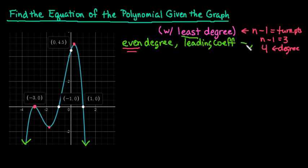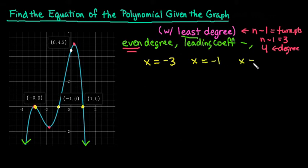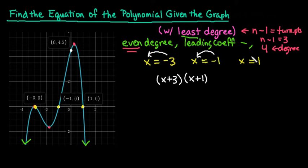Now that we've identified the degree and end behavior, that helps us with our exponents and how many x terms we need. We identify our zeros: the graph crosses at negative 3, negative 1, and positive 1. So our solutions are x equals negative 3, x equals negative 1, and x equals 1, which give us the factors x plus 3, x plus 1, and x minus 1.